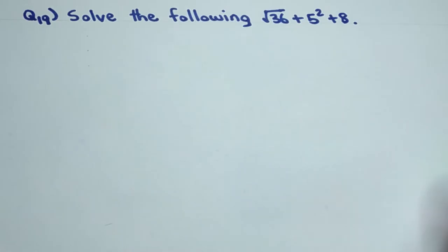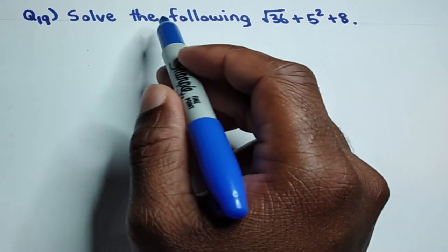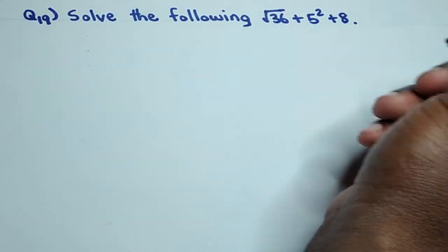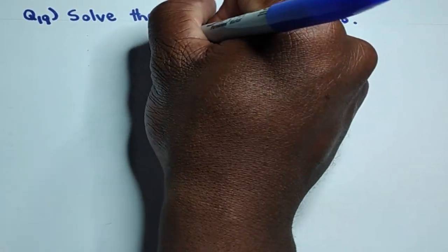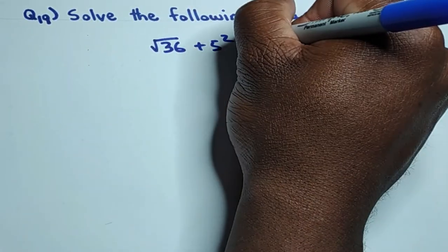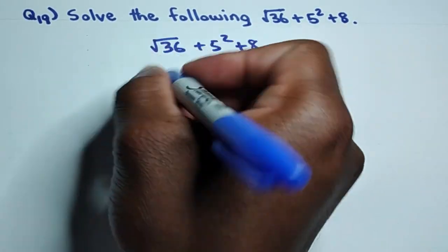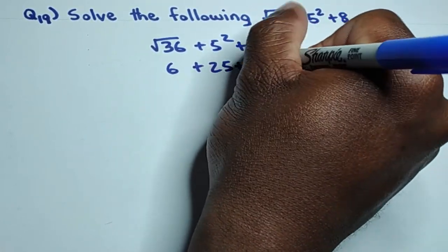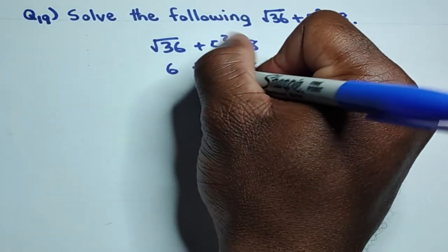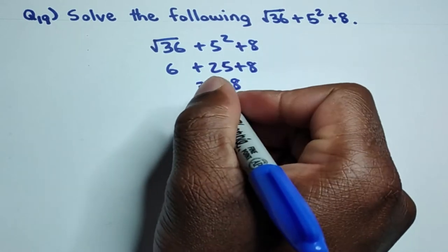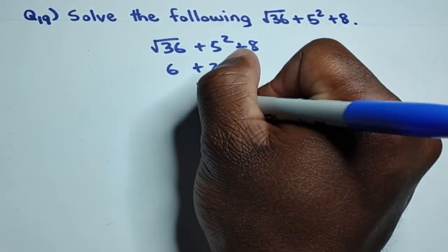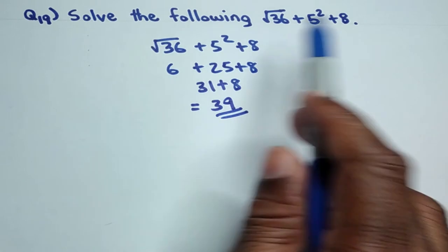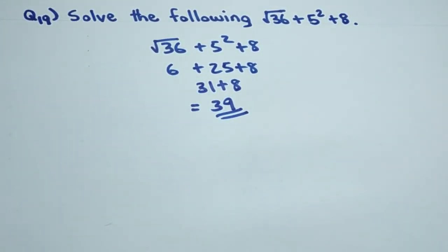Now let's look at question nineteen: solve the square root of 36 plus 5² plus 8. The square root of 36 is 6, and 5 squared is 25. So 6 plus 25 plus 8 equals 31 plus 8, which gives us 39. That is the solution for question nineteen.